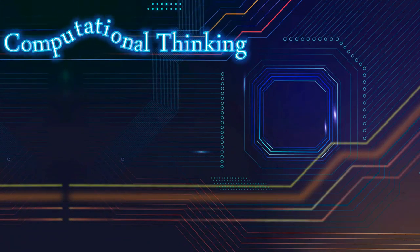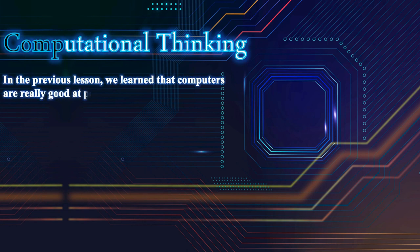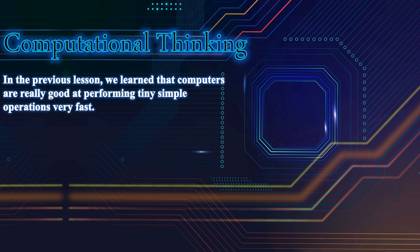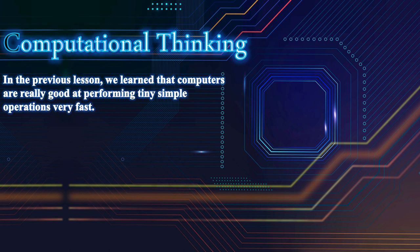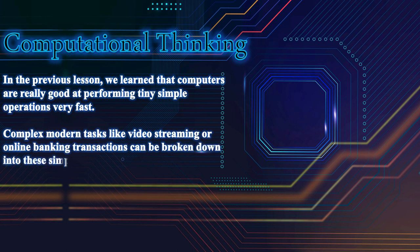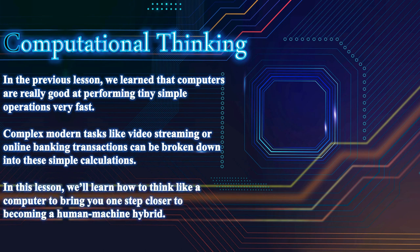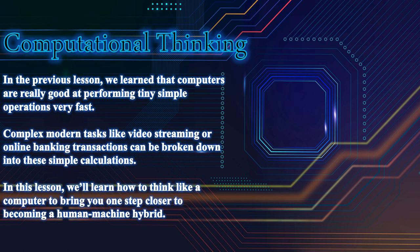Computational thinking: in the previous lesson we learned that computers are really good at performing tiny simple operations very fast. Complex modern tasks like video streaming or online banking transactions can be broken down into these simple calculations. In this lesson we'll learn how to think like a computer, bringing you one step closer to becoming a human-machine hybrid.